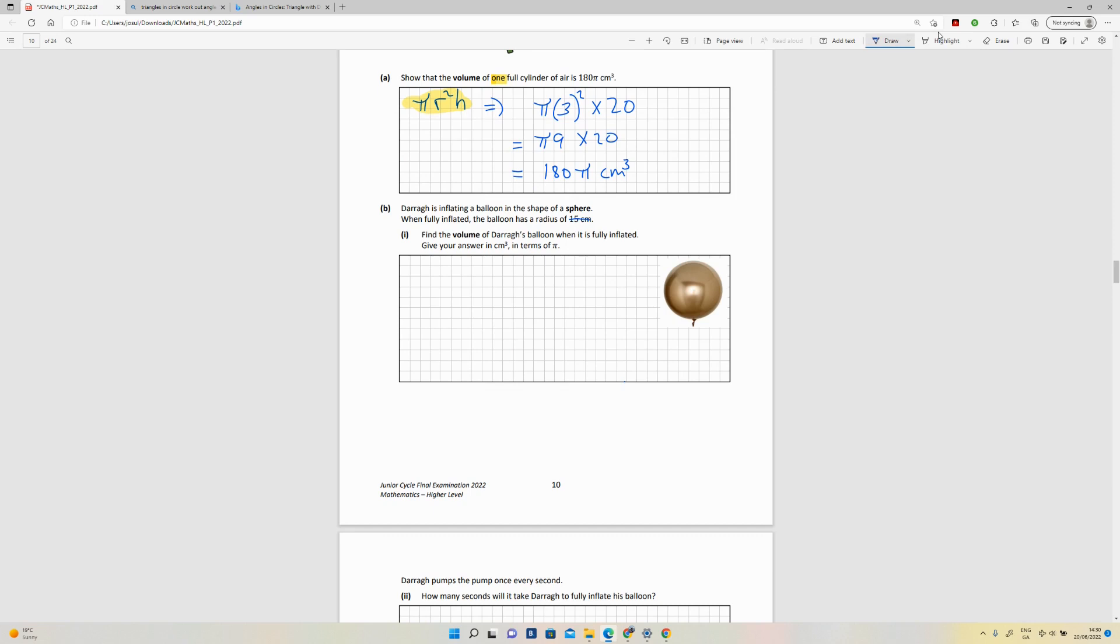The formula from the log tables is four-thirds multiplied by πr³. So here I just apply this: four-thirds by π, and the radius has been given as 15, so I multiply that three times—15 by 15 by 15. And when I do that, I'm going to get an answer of 4500π centimeters cubed.